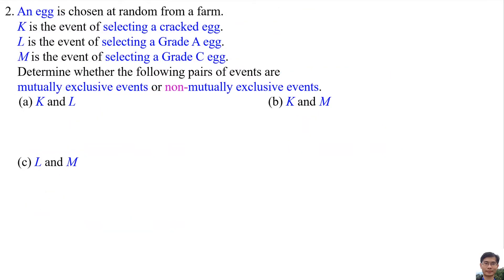Question 2: An egg is chosen at random from a farm. K is the event of selecting a correct egg, L is the event of selecting a grade A egg, and M is the event of selecting a grade C egg. Determine whether the following pairs of events are mutually exclusive or non-mutually exclusive events. Part A: K and L.